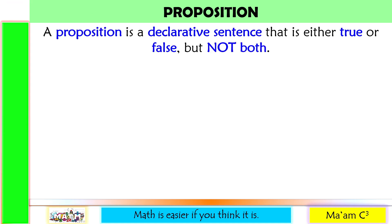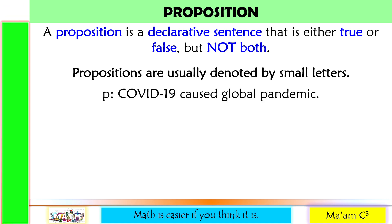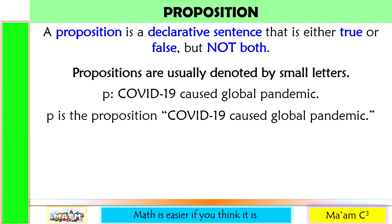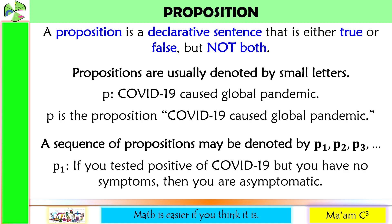A proposition is a declarative sentence that is either true or false, but not both. Propositions are usually denoted by small letters. For example, p is the proposition 'COVID-19 caused a global pandemic.' A sequence of propositions may be denoted by p1, p2, p3, and so on. For example, p1 is the proposition: 'If you tested positive for COVID-19 but have no symptoms, then you are asymptomatic.' You will learn more about sequences of propositions in the next lesson.